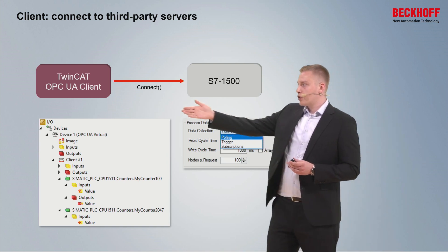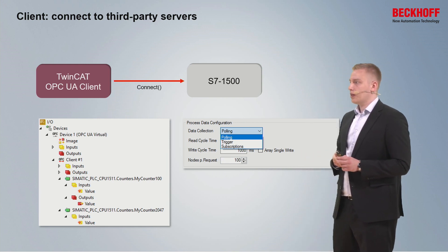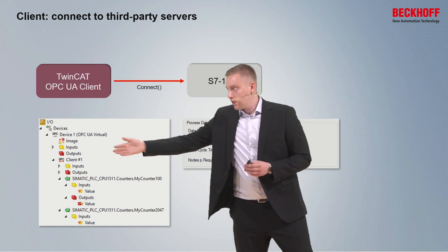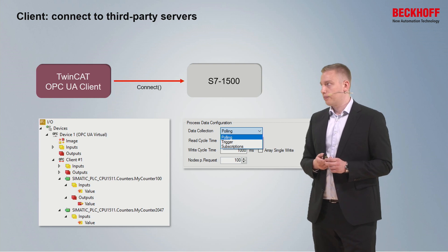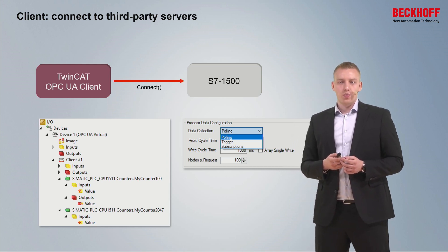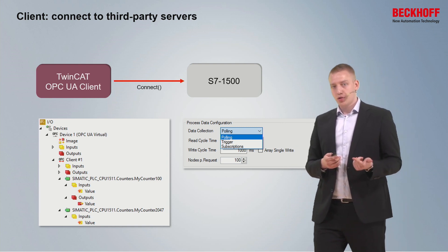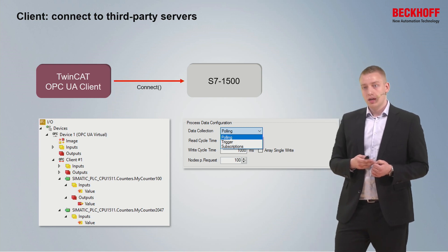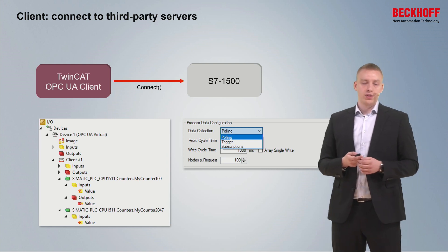An OPC UA virtual device can contain multiple OPC UA client devices, each representing one connection to an OPC UA server. For each client device, there are three ways to configure communication: polling, subscriptions, and triggers. Triggers are helpful for event-based communication, where a specific PLC event should trigger the reading or writing of a variable on the OPC UA server.